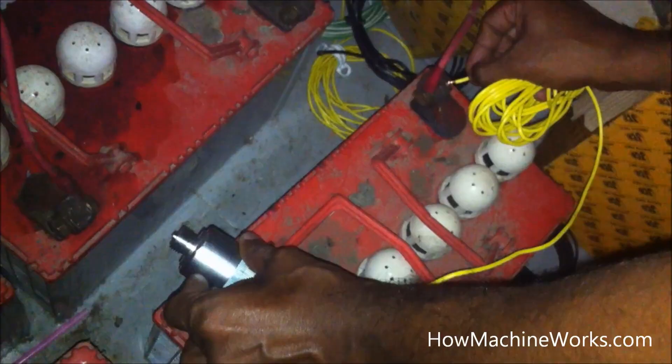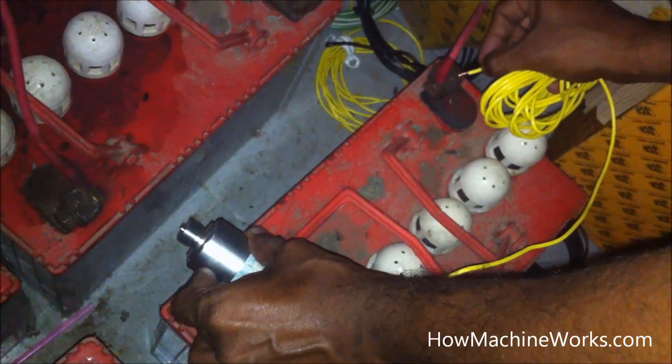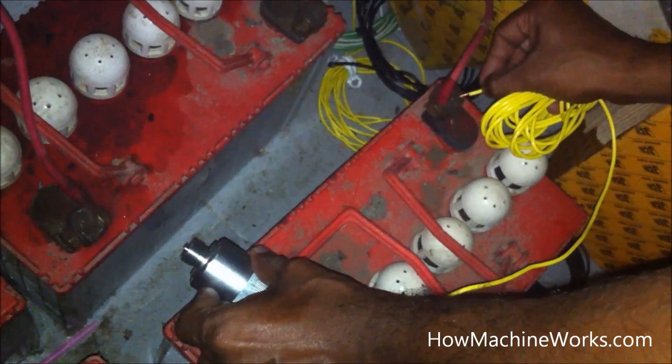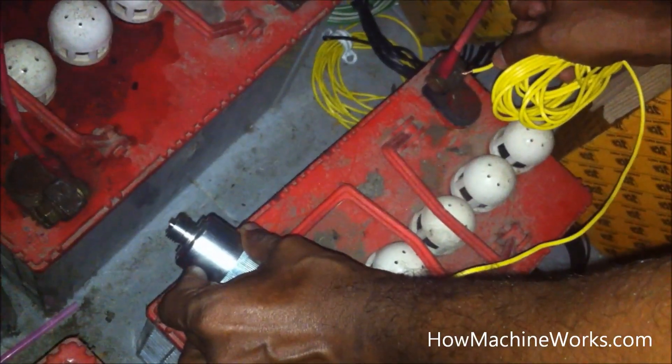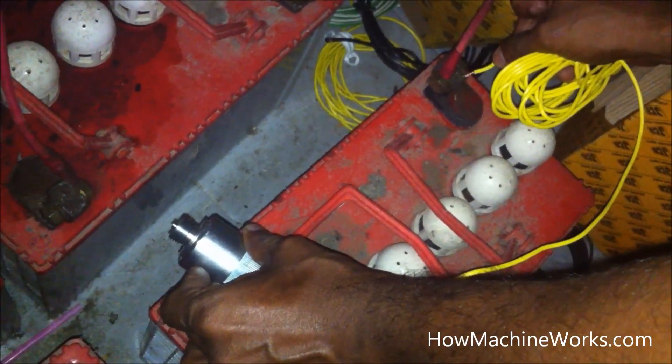So you can see when I'm giving the power, it energizes. The electromagnet energizes and the shaft is getting attracted and it moves inside. And as I release it, the shaft moves outside. So that's how simply a stop solenoid works.